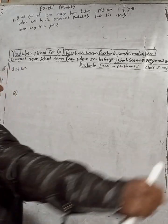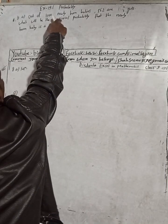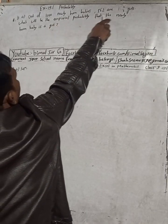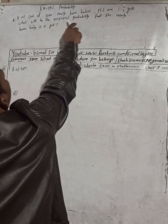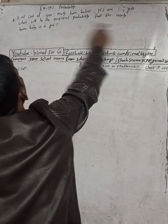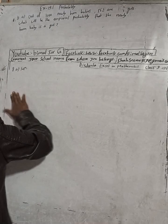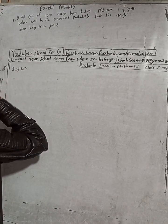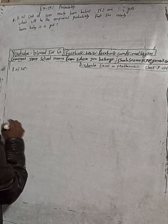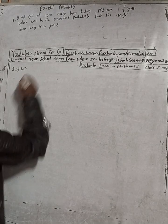The question is: out of thousand newly born babies, 562 are girls. What would be the empirical probability that the newly born baby is a girl?